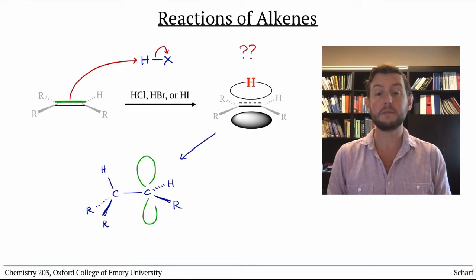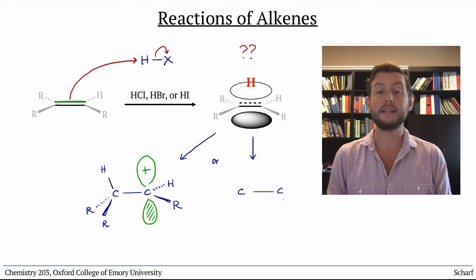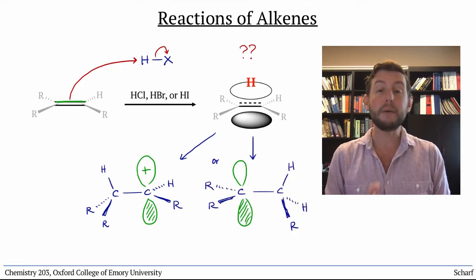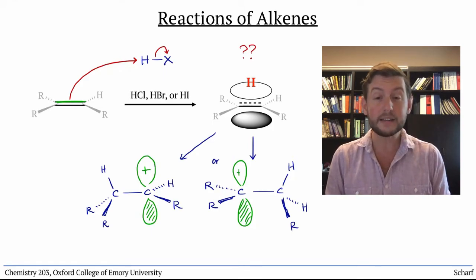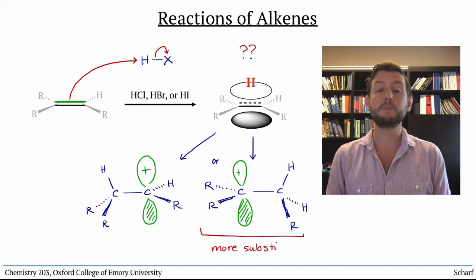This leaves behind a carbocation at whichever carbon doesn't get the new hydrogen. So we have two possibilities. The H goes to one carbon and leaves a carbocation at the other spot, or vice versa. Based on your knowledge of the SN1 and E1 reactions, can you identify which is more likely? The more substituted carbocation is more stable, so it is formed preferentially.